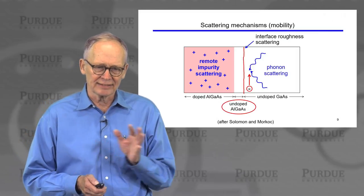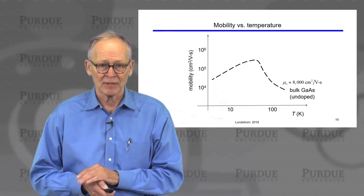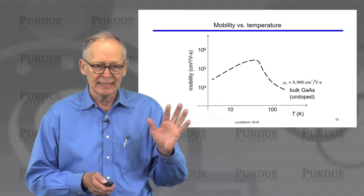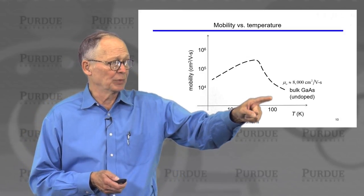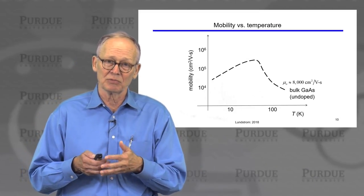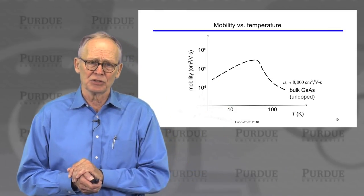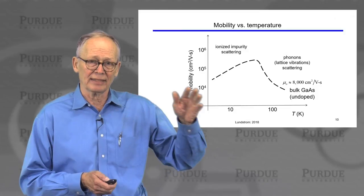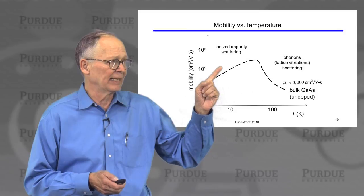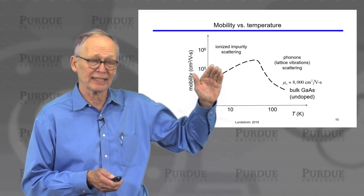The undoped setback layer is a key feature of HEMT epitaxy. If we measure electron mobility in the 2D electron gas as a function of temperature, cooling below room temperature increases mobility because lattice-vibration (phonon) scattering is frozen out. Mobility rises, usually reaches a peak, and then turns around and drops, because ionized impurity scattering has a different temperature dependence.